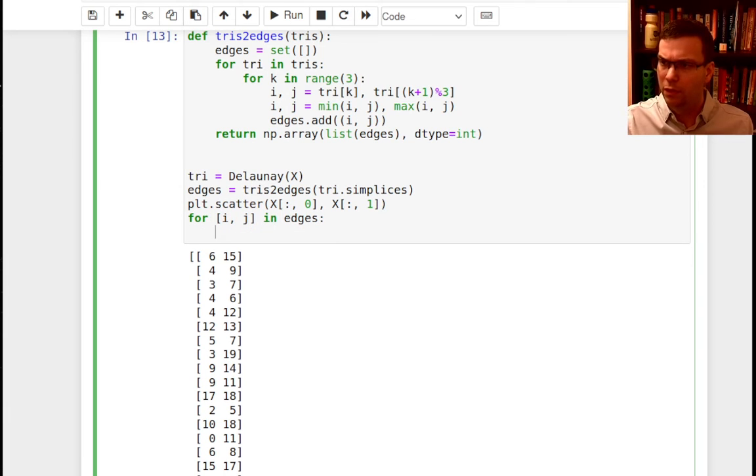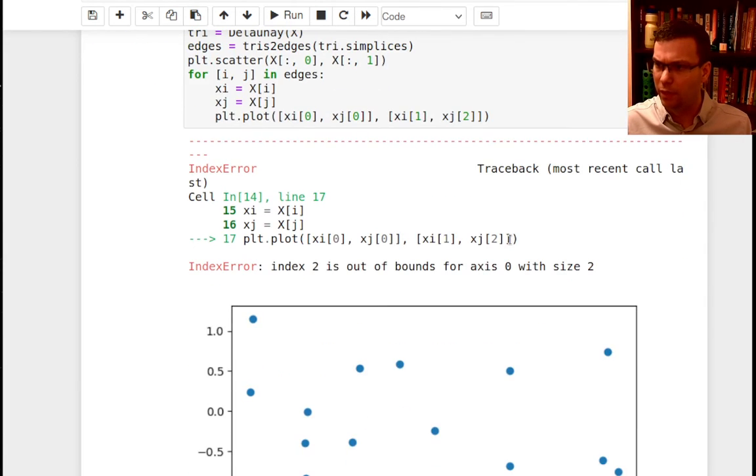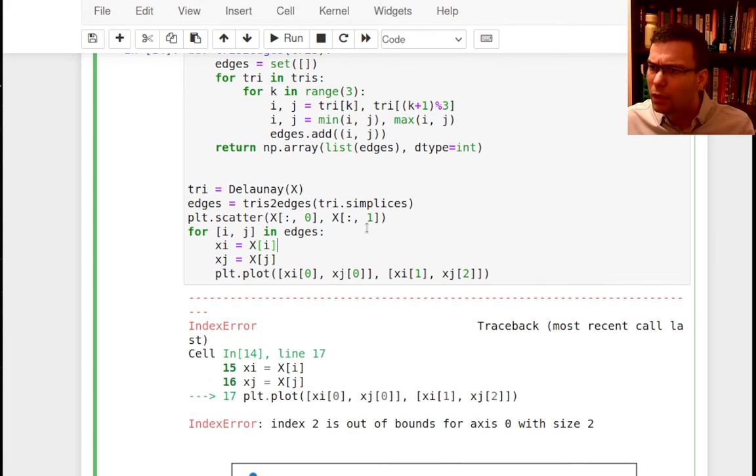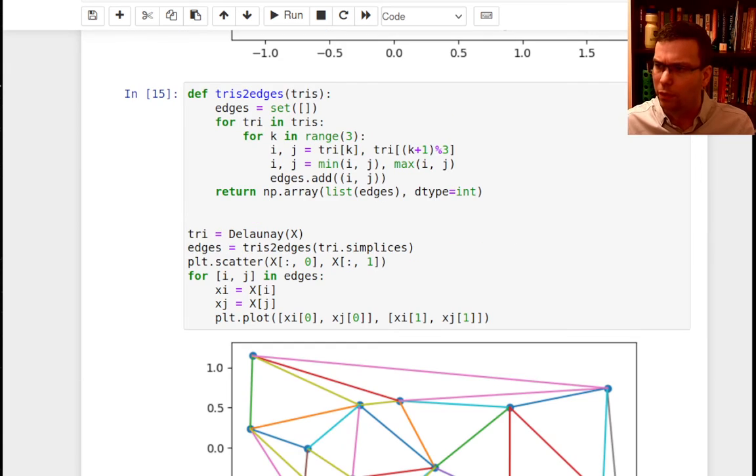plt.plot. Well, maybe I'll take out the first point. xi is equal to x at index i. xj is equal to big x at index j. And so I'll plot a line from the x-coordinate of the first point to the x-coordinate of the second point. And then using the y-coordinate of the first point, going to the y-coordinate of the second point. Let's see what that looks like. Oh, I didn't like that. Whoops, I meant to say index one.